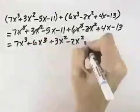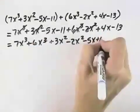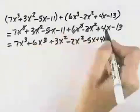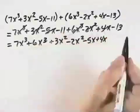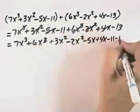Then I have two x terms: -5x and +4x. So I can group those two together. And finally, -11 and -13 can be grouped together.